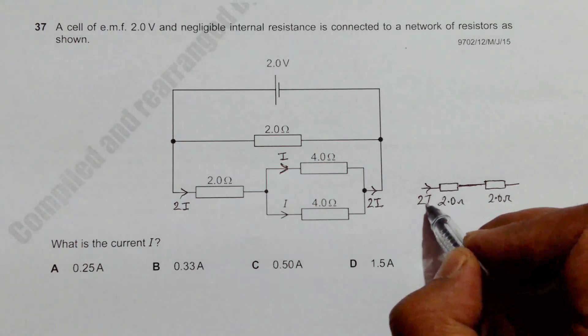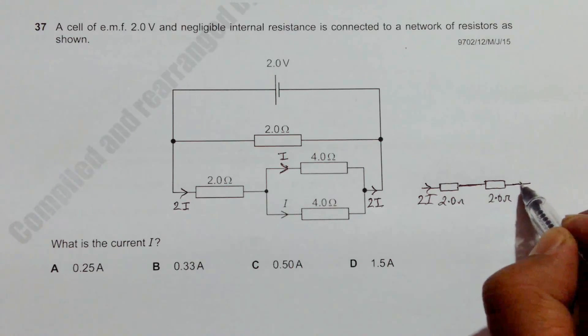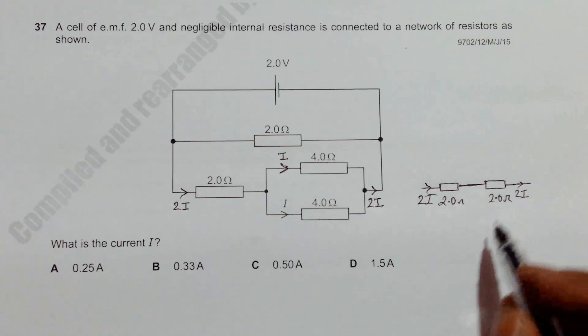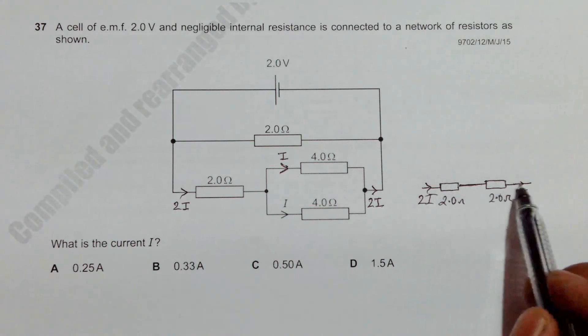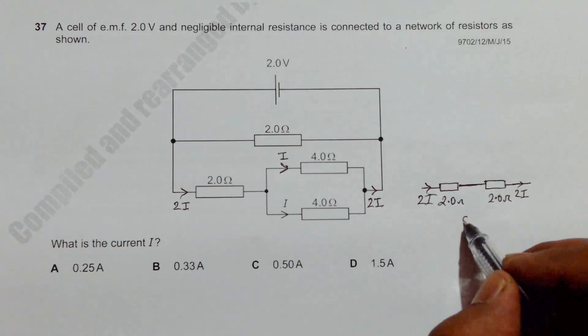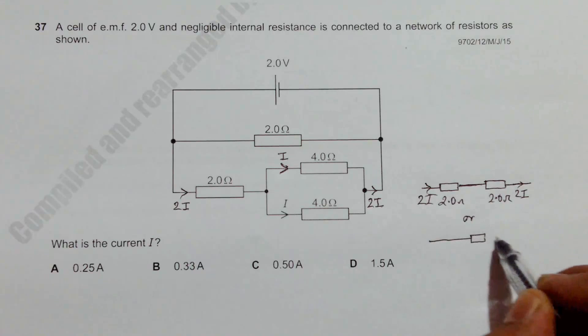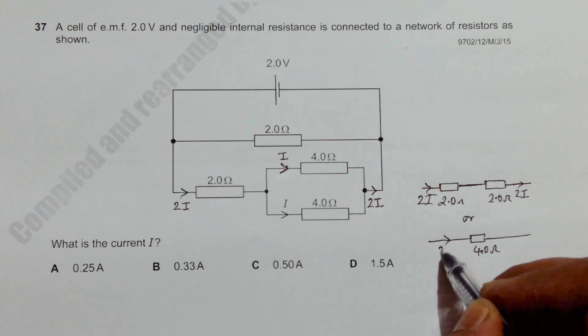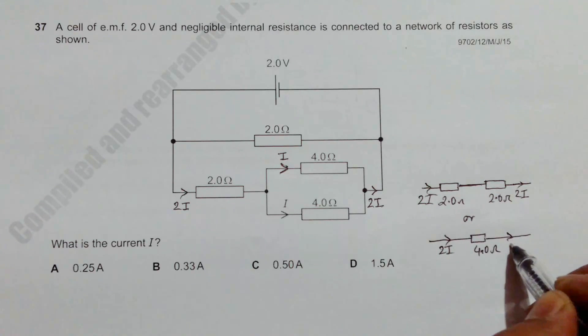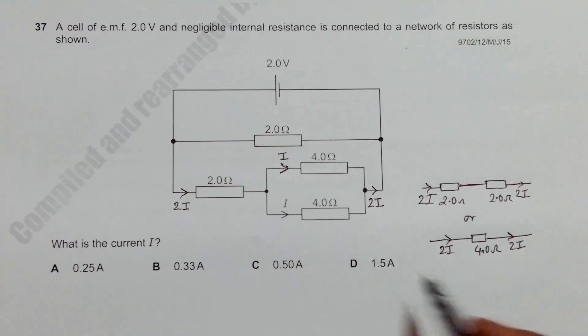So that means here we have 2I current here, 2I current here, and the total resistance will be equal to 2 plus 2, which is 4 ohm. So we can write it as like this: this is 4.0 ohm, the current is 2I and the current is 2I.